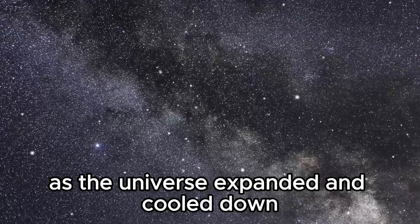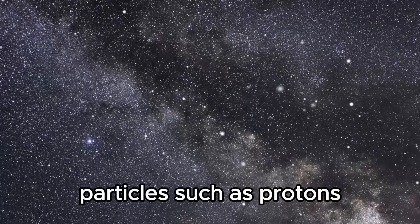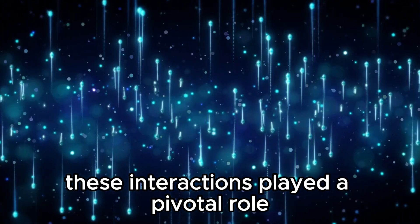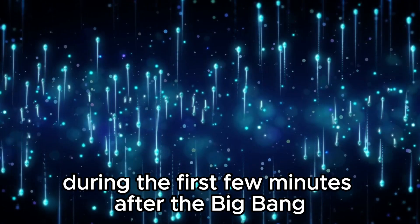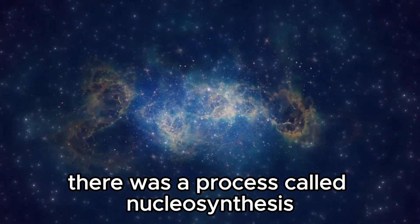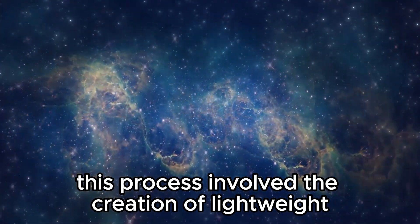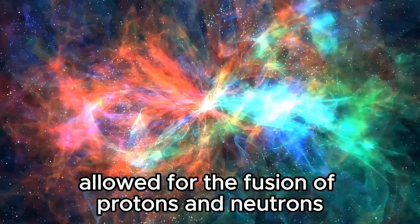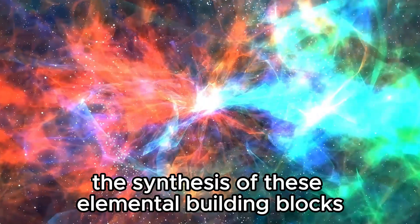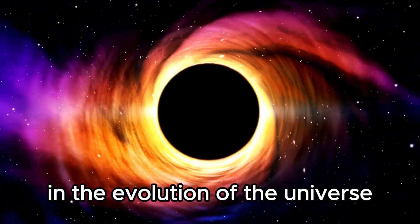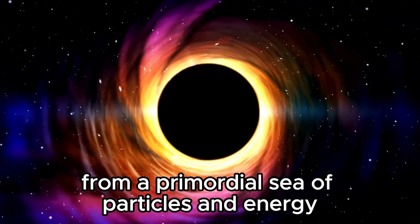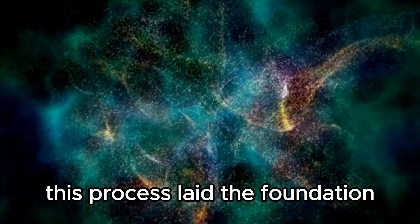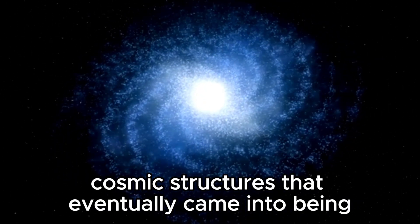As the universe expanded and cooled down, transformations took place. Particles such as protons, neutrons, and electrons began to interact with light and energy in their surroundings. These interactions played a pivotal role in shaping the formation of matter in the universe. During the first few minutes after the Big Bang, there was a process called nucleosynthesis. This process involved the creation of lightweight elements like hydrogen and helium. The extreme temperatures and density during this phase allowed for the fusion of protons and neutrons to form these simple atomic building blocks. The synthesis of these elemental building blocks was a significant milestone in the evolution of the universe. From a primordial sea of particles and energy, the early universe transitioned into a state where matter actually began to take shape.